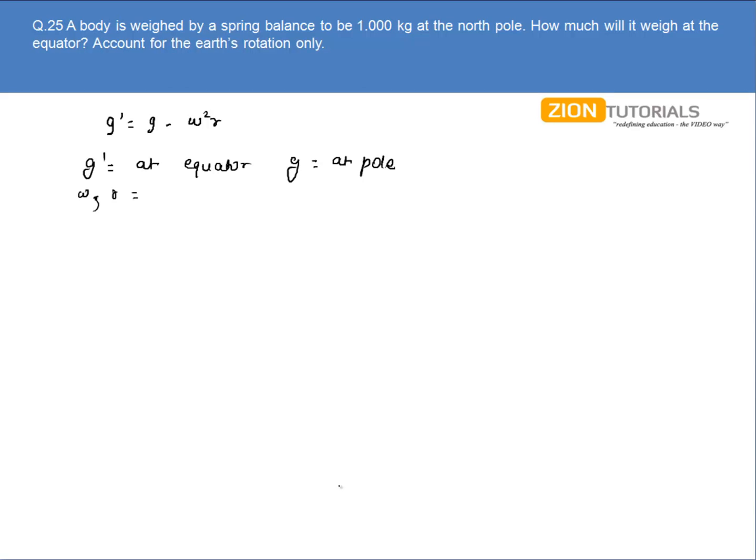Substituting the values: the value of g at the pole is 9.81 m/s². So g' = 9.81 - (7.3 × 10⁻⁵ radians per second)² × (6400 × 10³ meters).